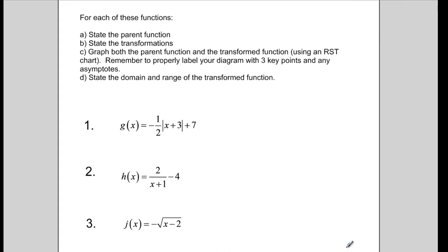So, now it's your turn. I want you to look at these three different examples that I have listed here. And I want you to do the following for them. For each of these, state what the parent function is. State the transformations. Graph both the parent function and the transform function using an RST chart. And I remind you here to properly label your diagram with three key points and any asymptotes that may exist. And lastly, state what the domain and range are for the transform function. You can find graph paper and an attachment on our class calendar. Good luck, and we'll see how you do in class.